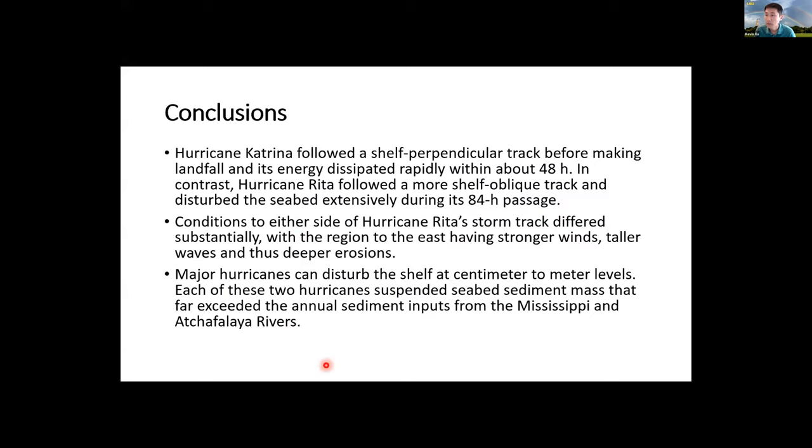To wrap up, we have three major conclusions. If we compare two hurricanes, Katrina followed a very shelf-perpendicular track. It was moving very fast and the energy dissipated only within two days. In contrast, Rita followed a more shelf-oblique track. It went across the entire Gulf of Mexico and it actually moved a little bit slower over a longer distance in the Gulf area. Because of that, you will see a longer impact from Rita.